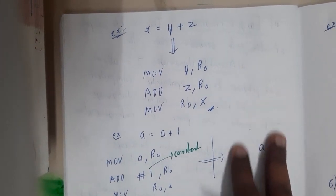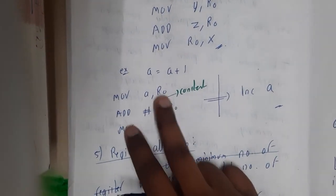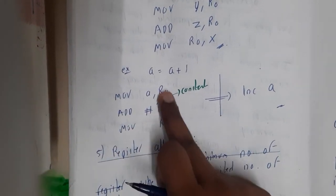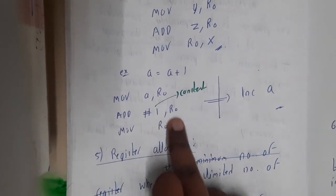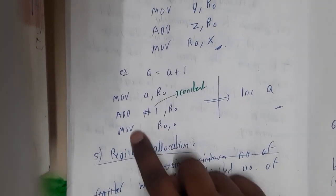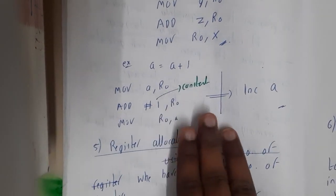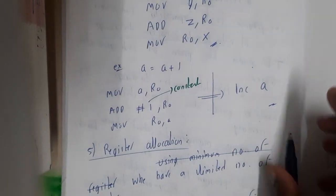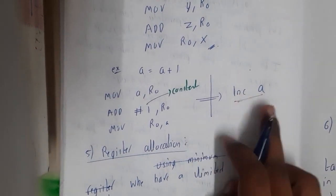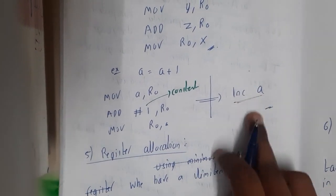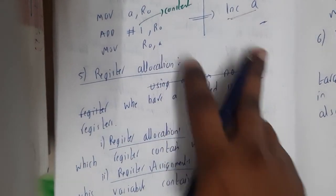If you take a small example, assume you are required to increment the value. A equals A plus one. Using assembly code you can do: move A comma R0, add hash one to R0, move R0 to A. This is a three step increment operation. But the CPU internally has an operation capacity of increment. Hence using increment is far better when compared to these three steps. So this selection is really important.